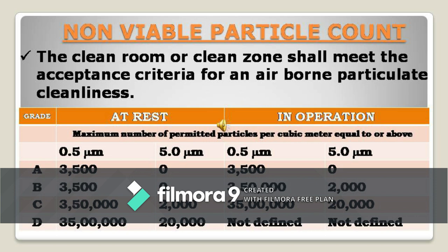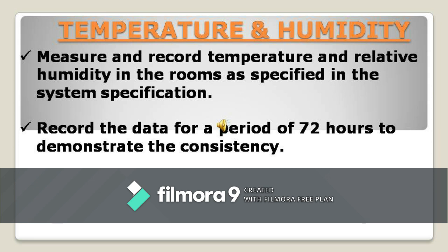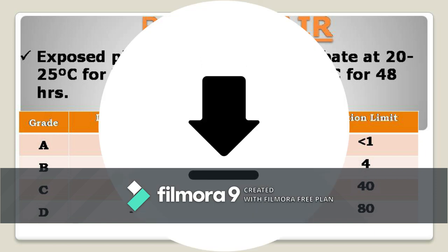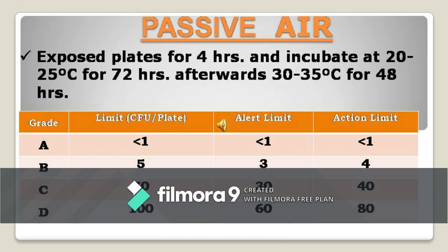Compare particle counts with the area range to confirm compliance. For microbial monitoring — passive air sampling — you need settle plates with SCDA media. Expose those plates at predefined locations determined on a rational basis by your microbiologist. Place them for at least four hours at those locations. Then incubate the SCDA plates at 20–25°C for 72 hours, followed by 30–35°C for 48 hours. These incubation conditions are the same for both active and passive sampling. Microbial growth limits after five days apply for grades A, B, C, and D.